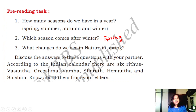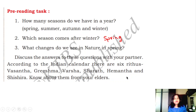Discuss the answers to these questions with your partner according to the Indian calendar. There are 6 Rutus — Rutus means seasons. They are: Vasanta, Grishma, Varsha, Skarat, Hemant, and Shishira. Go and ask your elders at home to know about them.